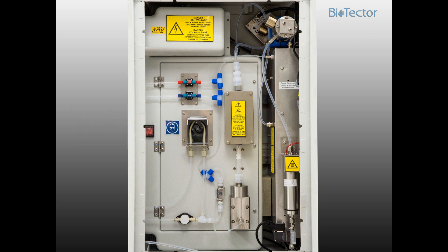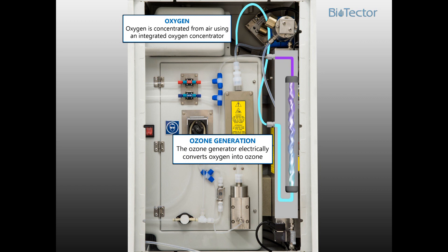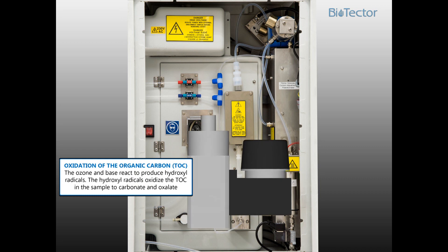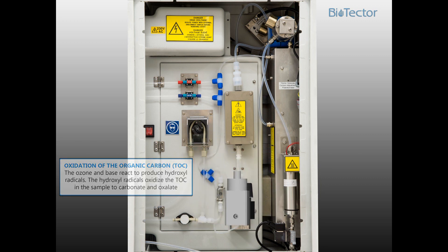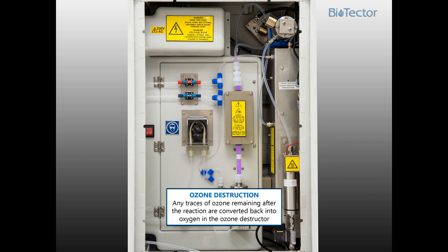Oxygen is concentrated from air using an integrated oxygen concentrator. The ozone generator electrically converts oxygen into ozone. The ozone and base react to produce hydroxyl radicals. The hydroxyl radicals oxidize the TOC in the sample, forming carbonate and oxalate. Any traces of ozone remaining after the reaction are converted back into oxygen in the ozone destructor.